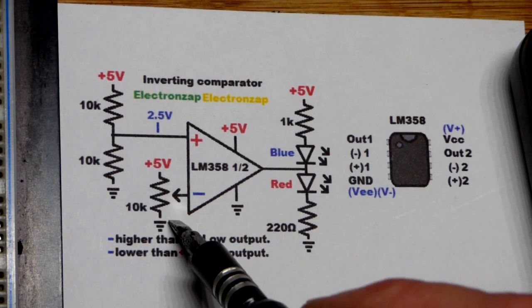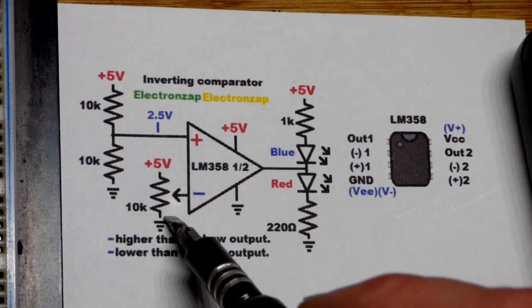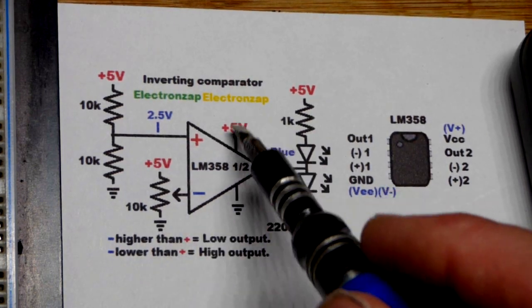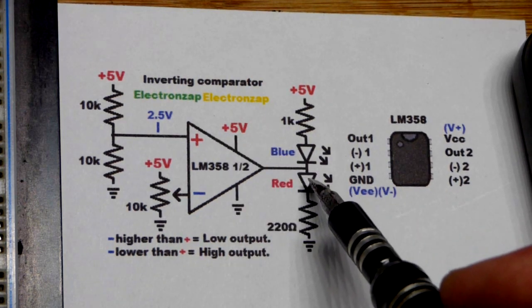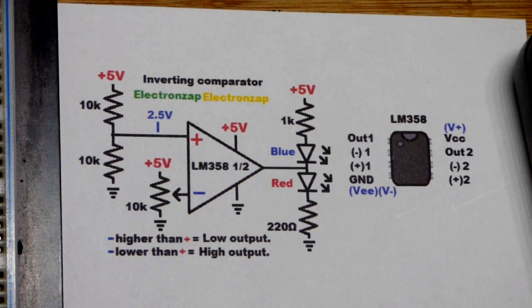Whereas if we drop below 2.5 volts, because that's the voltage that we set, then it'll be lower, which means we'll have a high output. And you don't get quite 5 volts, maybe 4, but the red LED will light up.